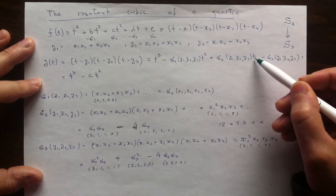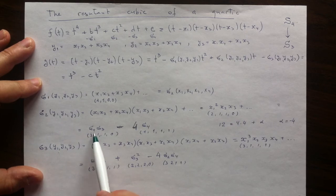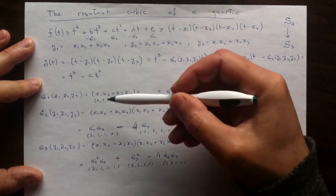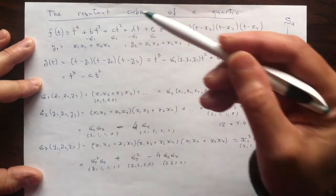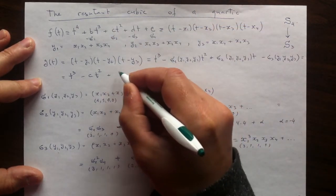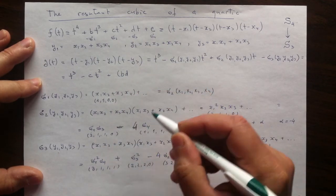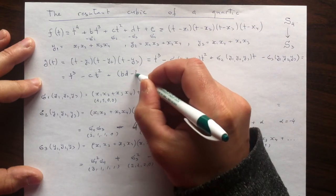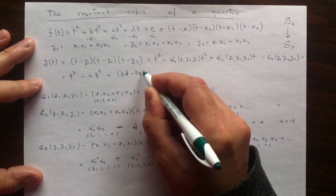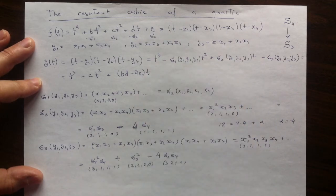For t I have to use σ2 of y's, which in terms of x's is σ1 σ3 minus 4σ4. σ1 is negative b, σ3 is negative d, so the overall will be bd. And then negative 4σ4 is negative 4e. That comes with a coefficient for t.